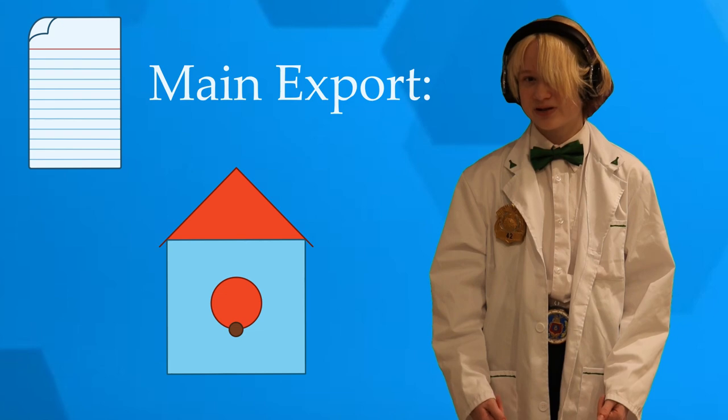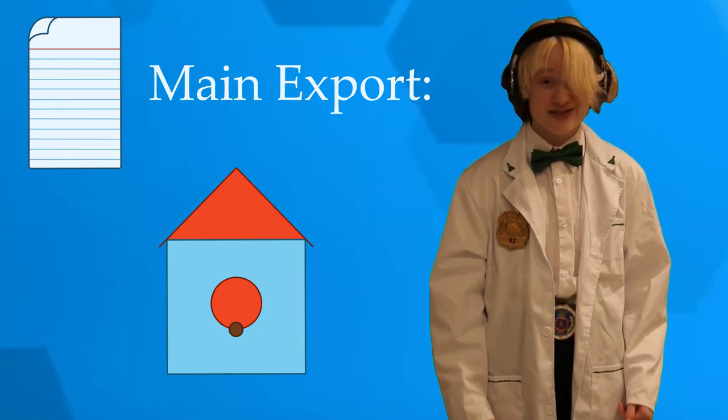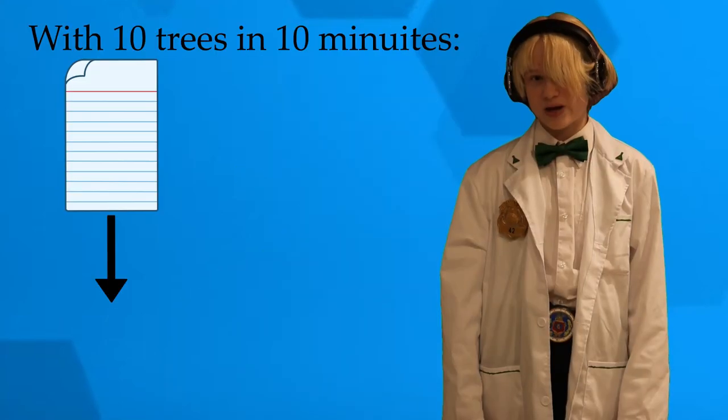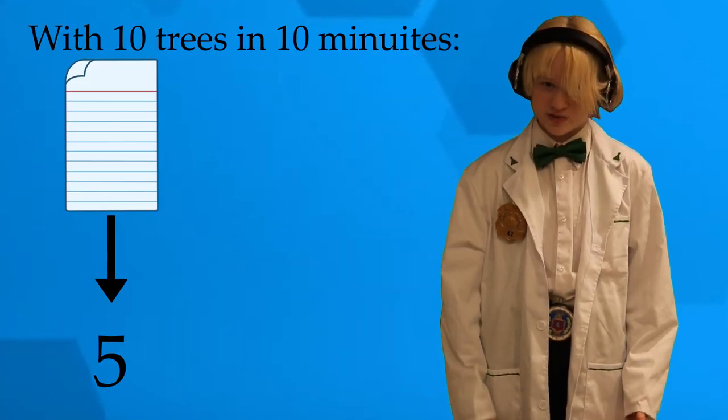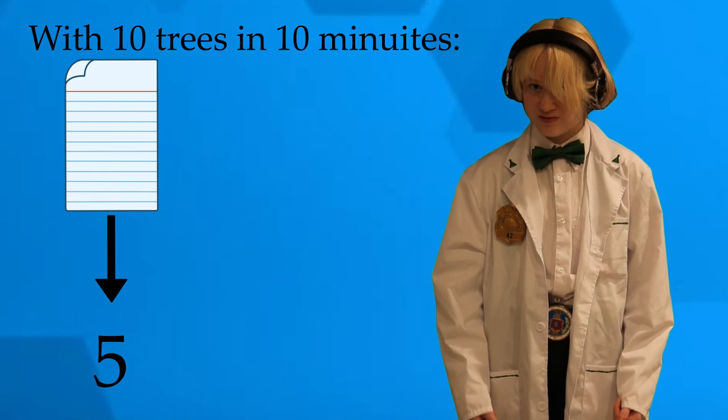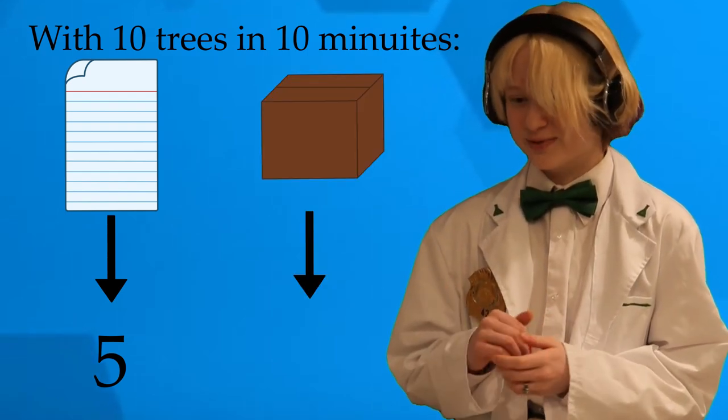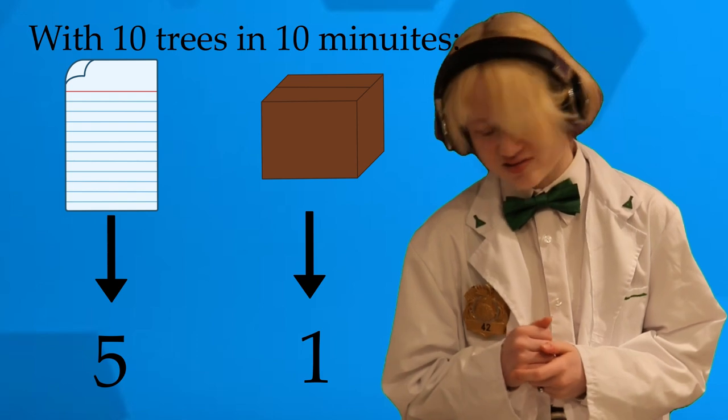Likewise, the Paper Kingdom's main export is birdhouses. This is perfect for the Cardboard Kingdom because the Cardboard Kingdom is plagued by an insane amount of birds every day, and they come and steal the cardboard and terrorize the citizens! The Paper Kingdom can make five birdhouses with 10 trees in 10 minutes. They have the absolute advantage here. For reference, the Cardboard Kingdom only makes one birdhouse with 10 trees in 10 minutes.